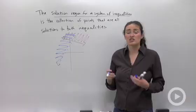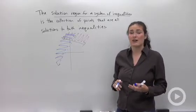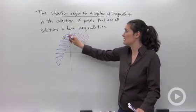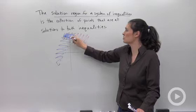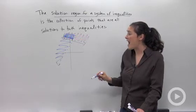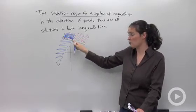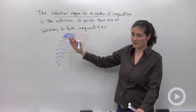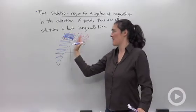What that means is that the solution region is where my two shadings overlap. It's this area right there. I have to be really careful that I have the two boundary lines. This one in this case happened to be that solid guy and that dashed guy.